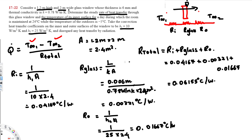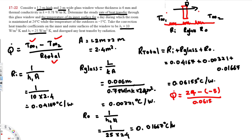Now we have all the information to calculate Q̇. Plugging in: Q̇ = (T∞₁ − T∞₂) / R_total = (24 − (−5)) / 0.06155 = 29 / 0.06155 ≈ 471 watts.